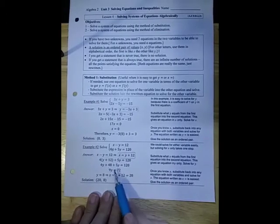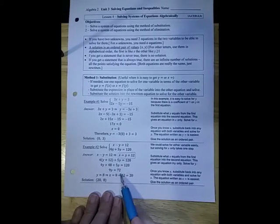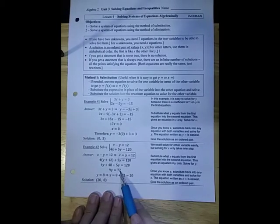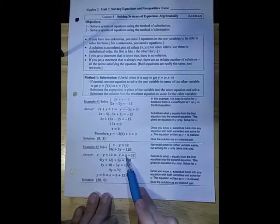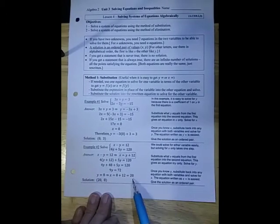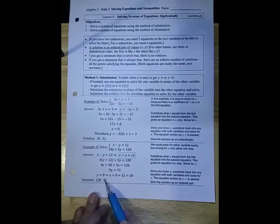To give me 4 times the quantity y plus 12 plus 5y is 120. Again you're going to distribute the 4, combine like terms, and take that minus 48 to the other side. Then divide both sides by 9. You get y equals 8. Since I know y is 8, go back and put it up here. x is 20. The solution will be (20, 8).